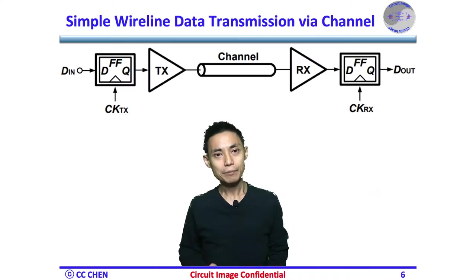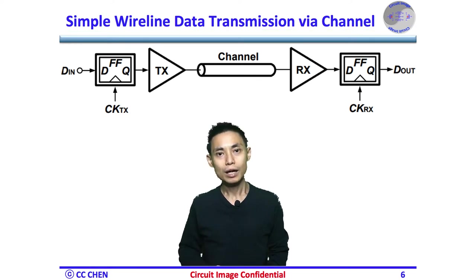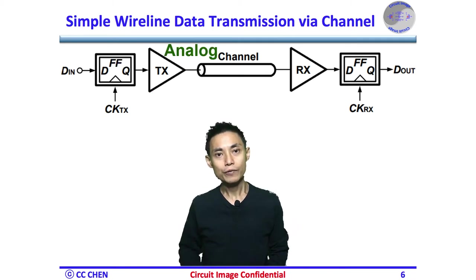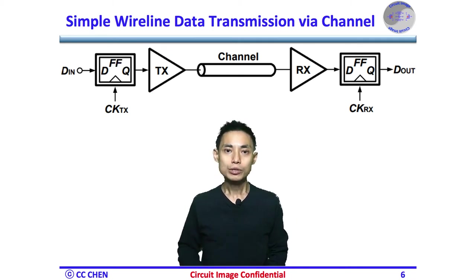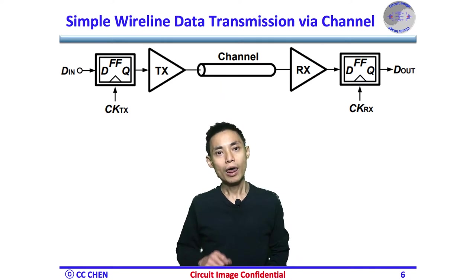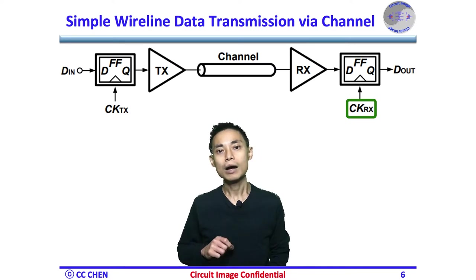To address the timing concept, a simple wired data transmission via channel is shown here. The transmitted signal DIN is sampled through the TX clock CK-TX, and the digital bits are converted to an analog waveform by the TX driver. The output swing of the TX could be hundreds of mV, sent through a channel to the RX input. The RX front-end amplifier will amplify the swing for the sampler. The sampler may require the TX clock CK-TX to sample the data properly.